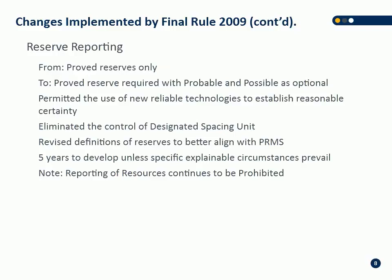Prior to the final rule of 2009, you were only allowed to disclose proved reserves — the only thing you were allowed to put in public disclosure in the U.S. No resources, no contingent, no prospective, no probable or possible — you could only disclose proved. They've now moved to required disclosure of proved reserves with optional disclosure of probable and possible. They also made some changes to a few of their definitions.